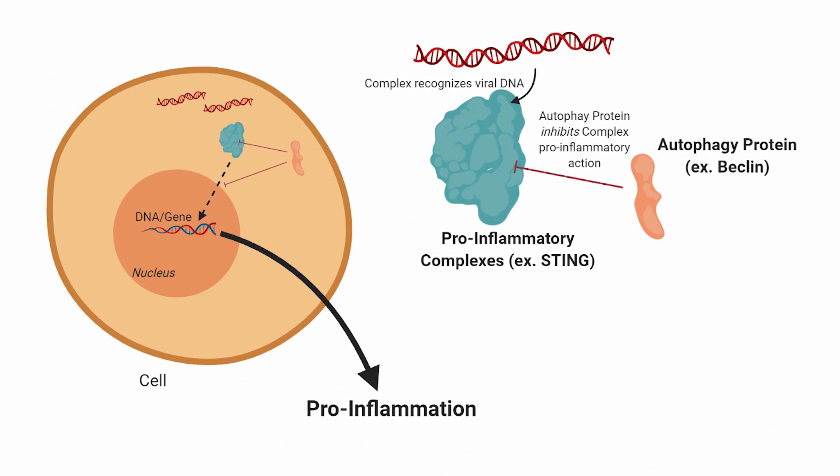Not only that, some of the autophagy-related proteins, like Beclin and ATG9, will bind other signaling complexes that would otherwise translocate — that's to say, move — to the nucleus and further the pro-inflammatory signaling. When Beclin and other autophagy-associated proteins bind these signaling complexes, like STING, they inhibit the ability to affect the genes, reducing inflammatory signaling.